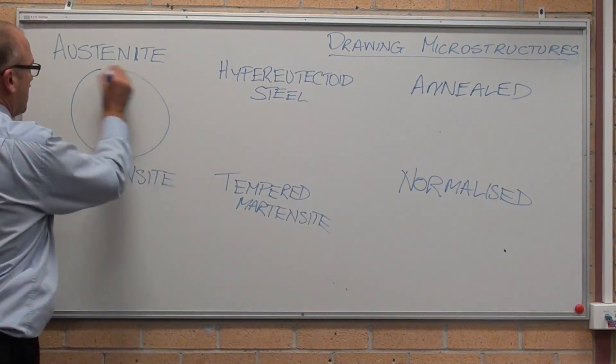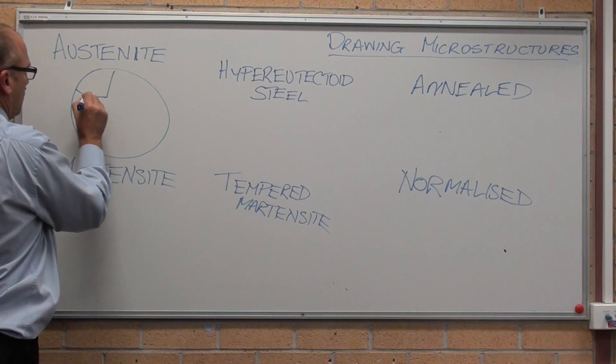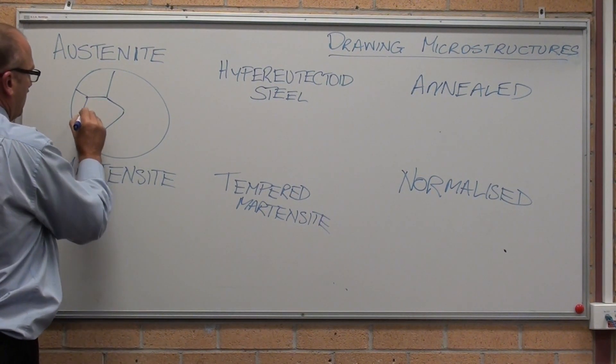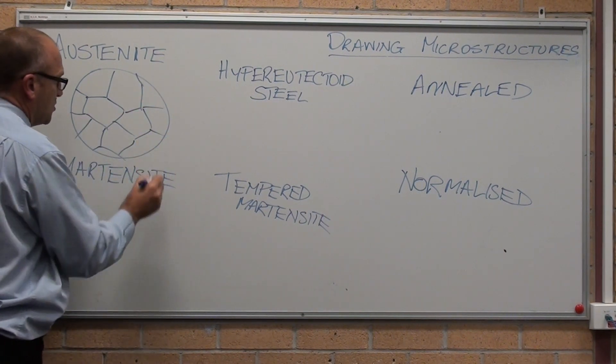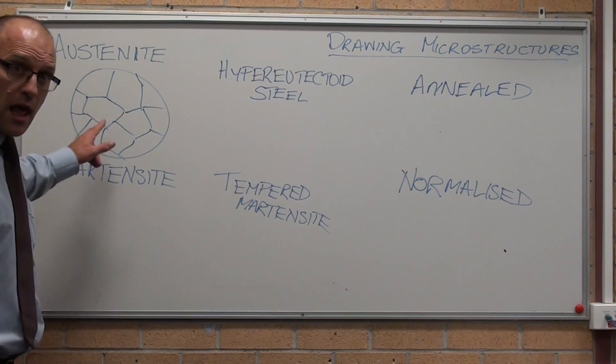So, austenite, high temperature. One, two, three. Austenite is large grains.